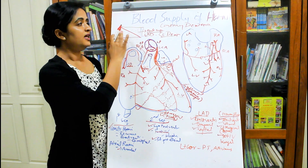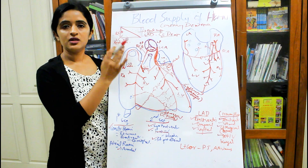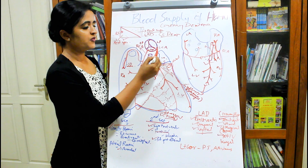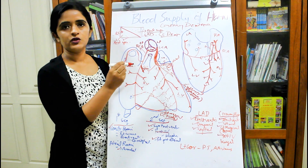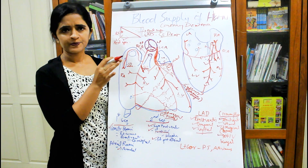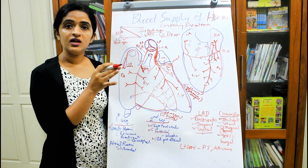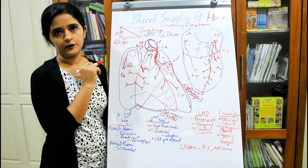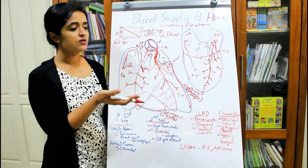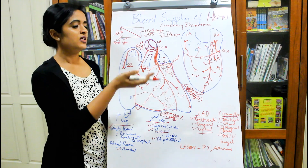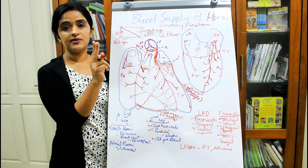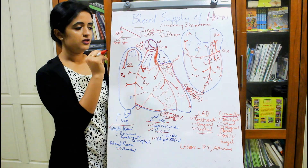In left coronary dominance, the entire interventricular septum is ultimately supplied by the left coronary artery. So if there is a block in the left coronary artery, the entire interventricular septum will suffer. That is why left coronary dominance is more dangerous compared to right coronary dominance. Co-dominance is always safe because branches from both right and left supply the interventricular septum, with two posterior interventricular branches present. So co-dominance is said to be the safest.